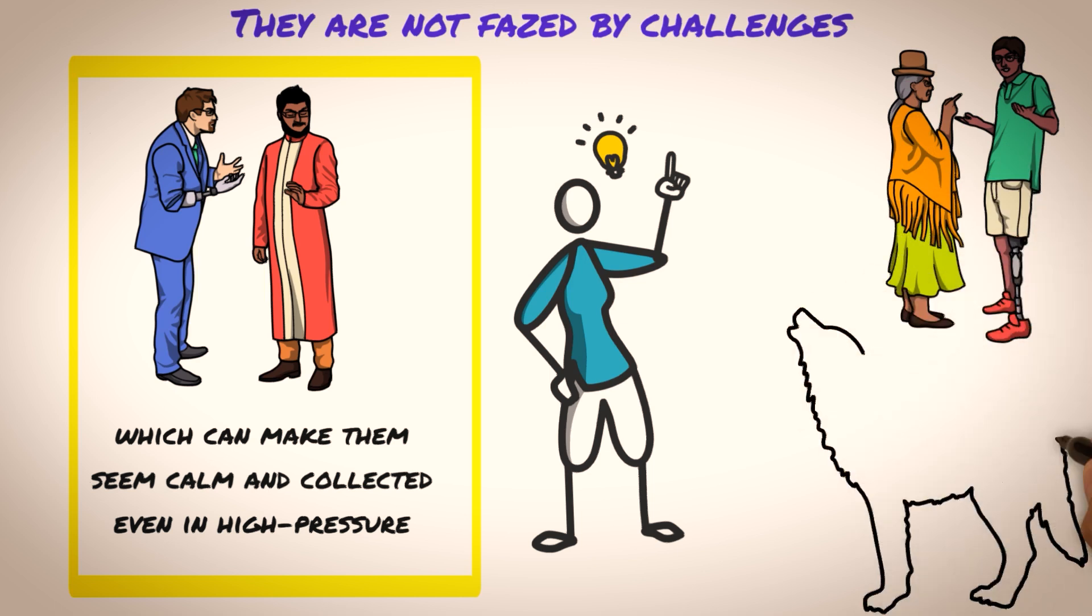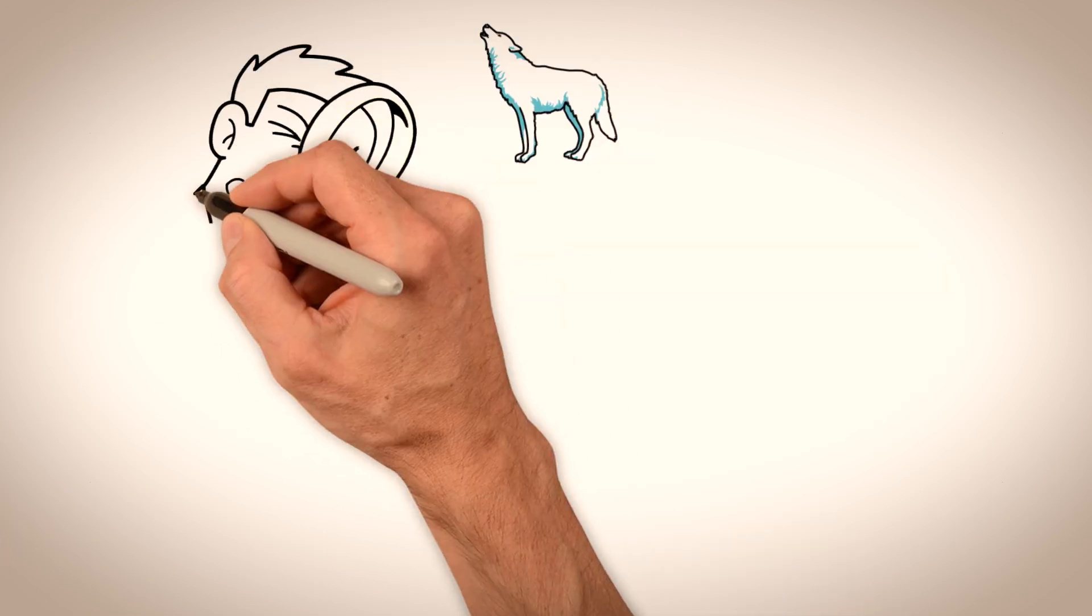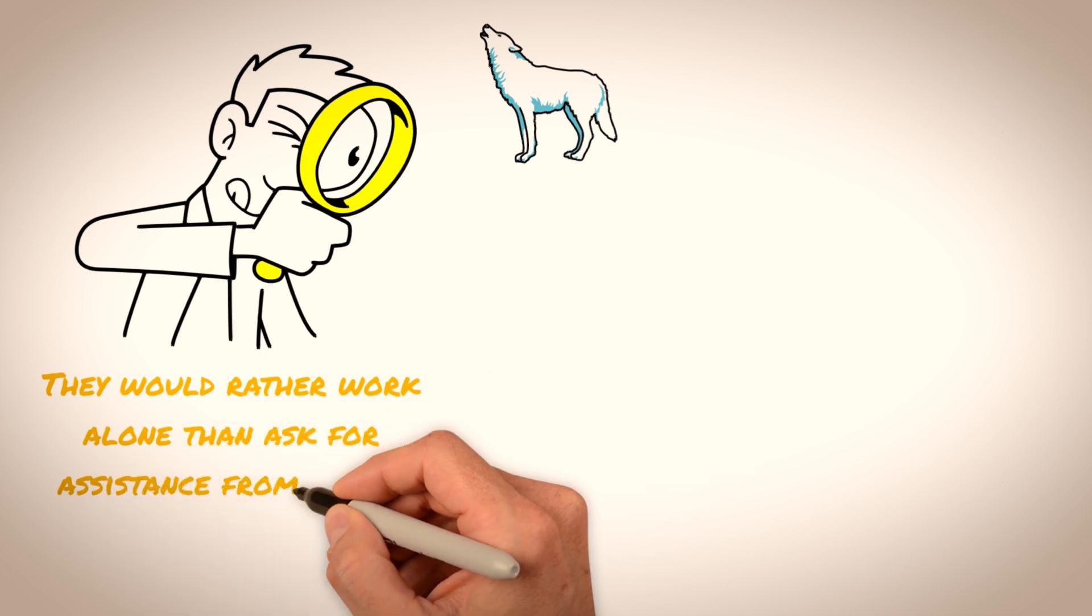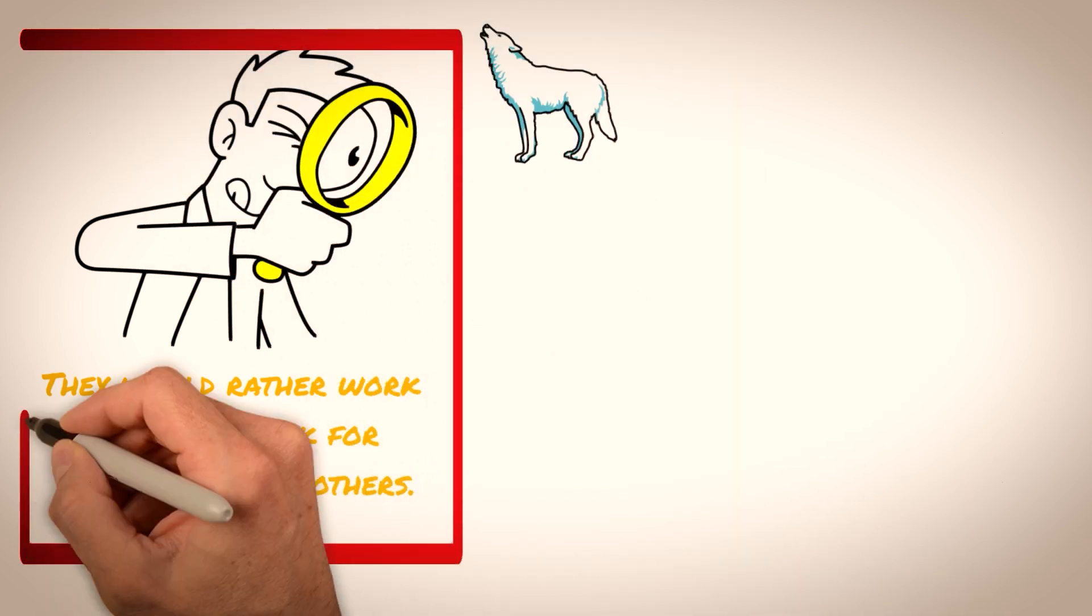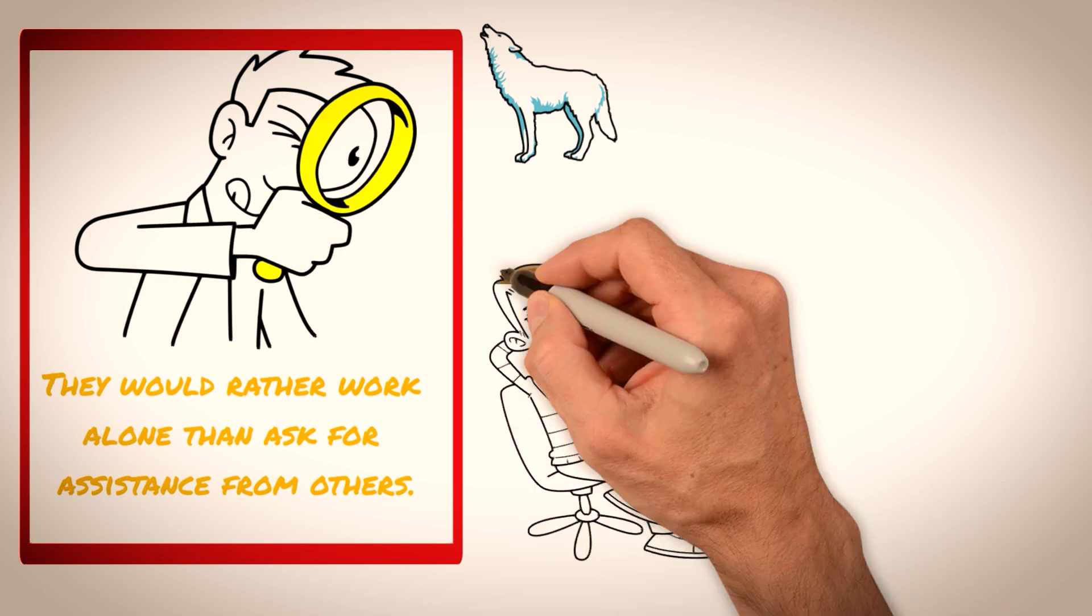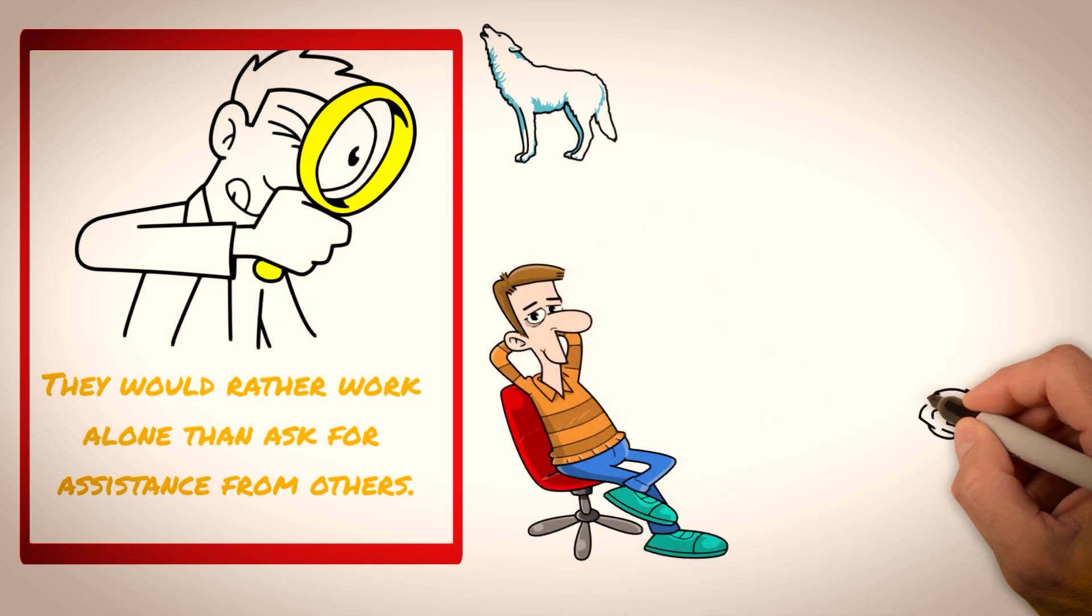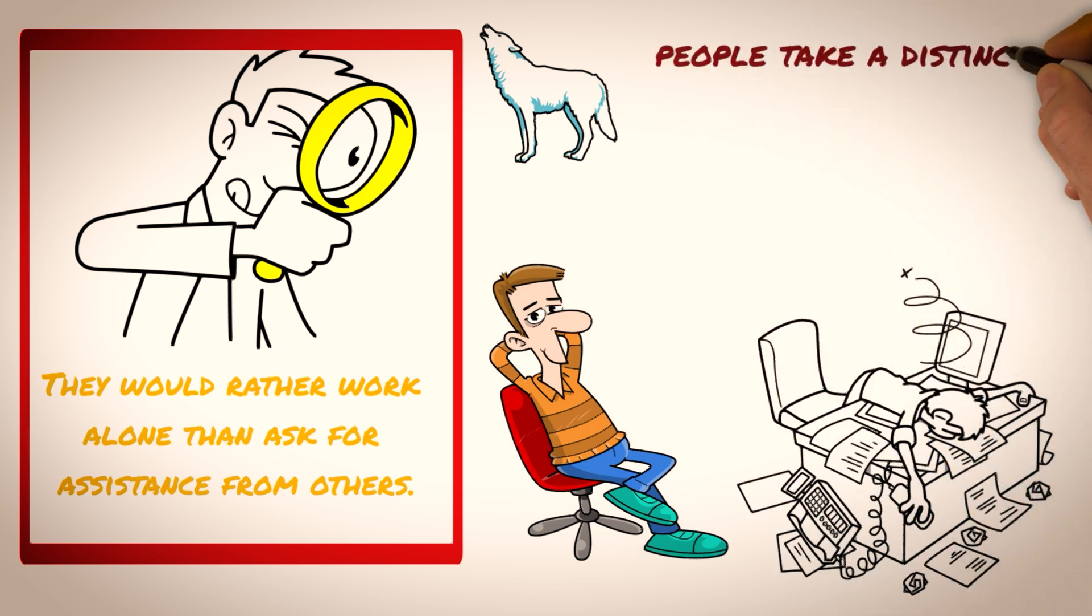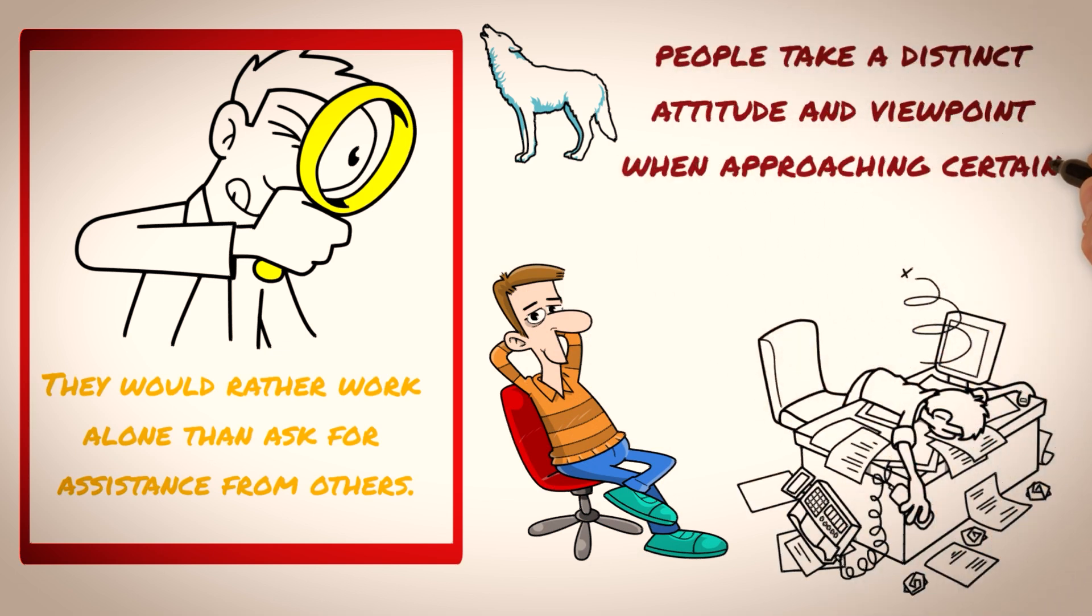The lone wolf simply has a different way of approaching challenges. They are often more focused on finding a solution than dwelling on the problem, and they prefer to work independently rather than seek out help from others. While Sigma males may not be phased by challenges, this does not mean that they are invincible. They still face obstacles and setbacks like anyone else, but they approach these situations with a different mindset and perspective.